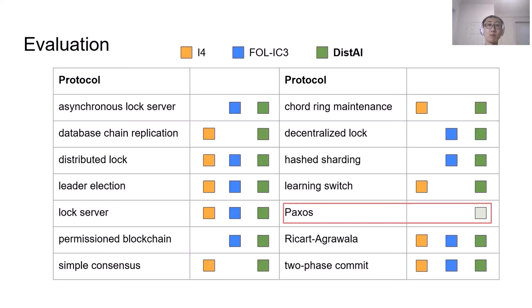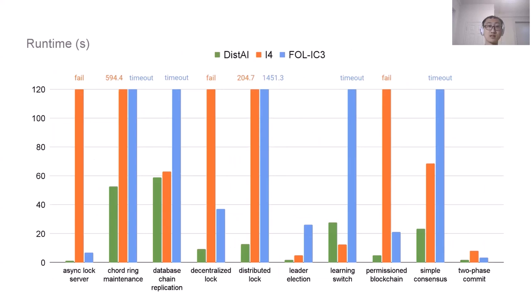Now we take a closer look at the efficiency of each tool. The x-axis shows the different protocols, and the y-axis shows the runtime to solve them. We can see that DistAI is much faster than both I4 and FOL-IC3, sometimes by more than one magnitude faster. I4 fails on several protocols, which basically means we encounter errors when running the tool. For FOL-IC3, although it's theoretically guaranteed to find the correct invariants, it times out on four protocols after one week.